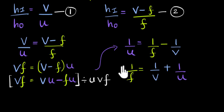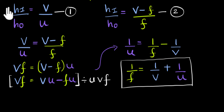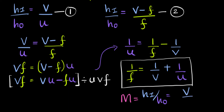That is the equation connecting the focal length, the object distance, and the image distance. Once we know V, we can substitute back to find the height of the image. Just like with mirrors, we define magnification M as the height of the image divided by the height of the object — and that turns out to equal V divided by U.